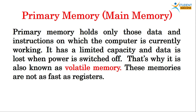The next main type of computer memory is primary memory, also known as the main memory of the computer system. Primary memory holds only those data and instructions on which the computer is currently working. It has a limited capacity and the data is lost when the power is switched off, so that is why it is known as volatile memory.